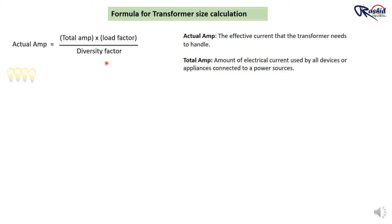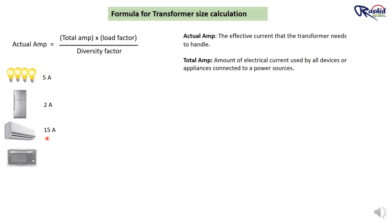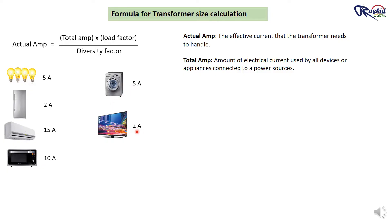Imagine you have the following appliances in your flat: lights at 5 Ampere, refrigerator at 2 Ampere, air conditioner at 15 Ampere, microwave at 10 Ampere, washing machine at 5 Ampere, and TV at 2 Ampere. If you add all these up, your total ampere would be 39 Ampere. So this 39 Ampere is the Total Ampere.